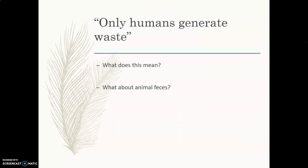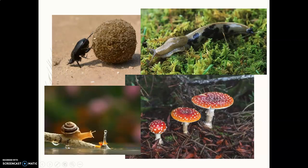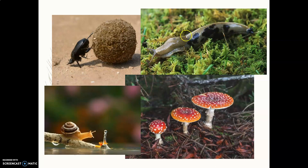Starting with our notes: your book says only humans generate waste. Does nature generate waste? Why doesn't nature generate waste? What about animal feces — is that waste? We look at various examples of waste in nature. Here we have a dung beetle rolling a big ball of poop — he is a detrivore, recycling that waste and breaking it down so it can be used again. We've got a slug breaking down some material, fungi, and a snail. All of these things are recycling nutrients to be used in those nutrient cycles again.